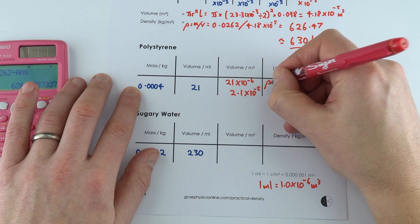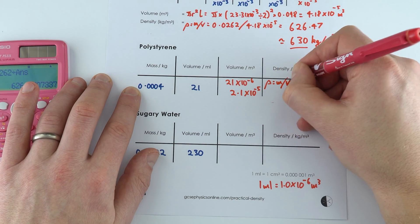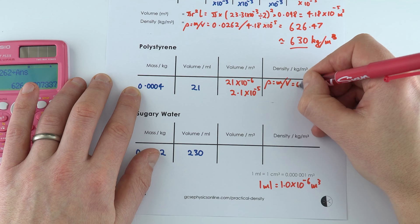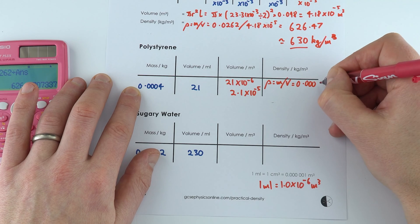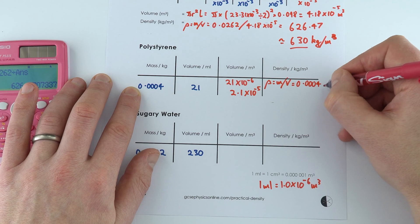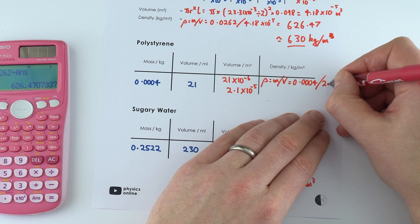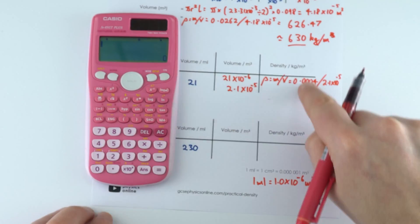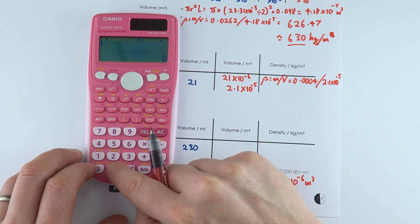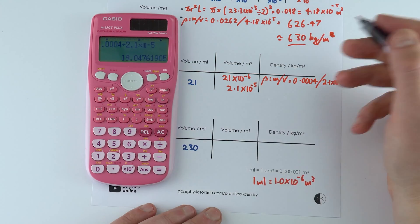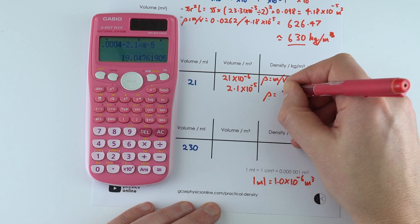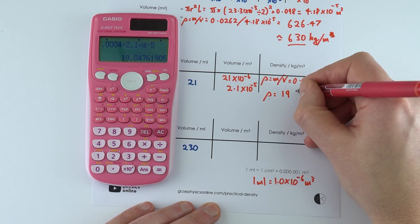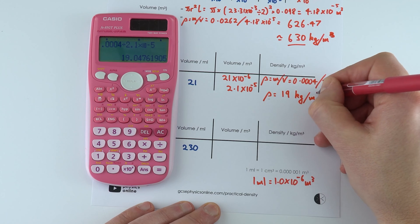So when it comes to working out the density, that's equal to the mass divided by the volume which is 0.00004 divided by 2.1 times 10 to the minus 5. So a small number divided by a really small number and this gives a value equal to 19 kilograms per cubic meter.